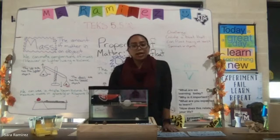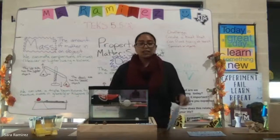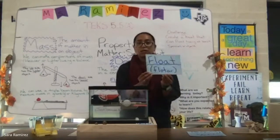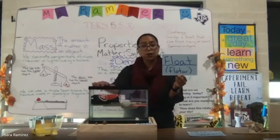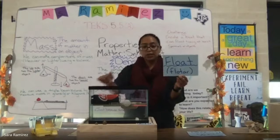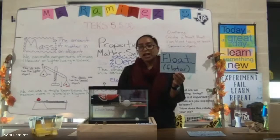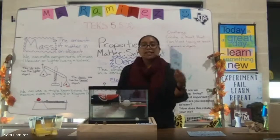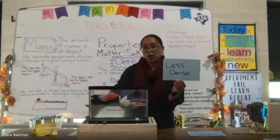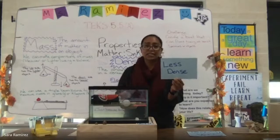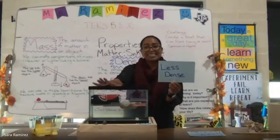Did any of those objects surprise you as to why they are sinking or floating? The objects that are floating — on the surface of the water — are our empty soda can, the piece of wood, the ping-pong ball, the pumice stone, and the candle. Why do you think those items floated? We can say the items floated because they are less dense than water. Objects that are less dense than the liquid they are in will float.